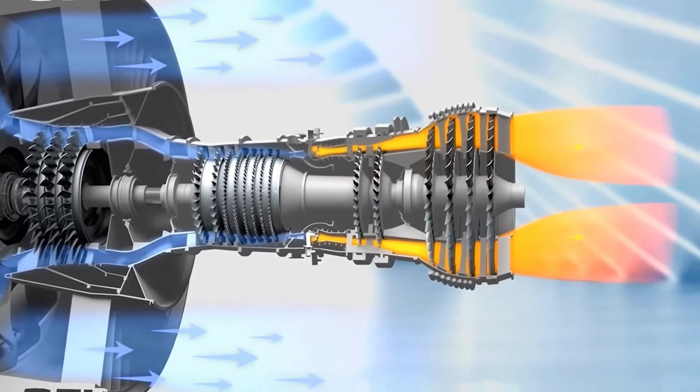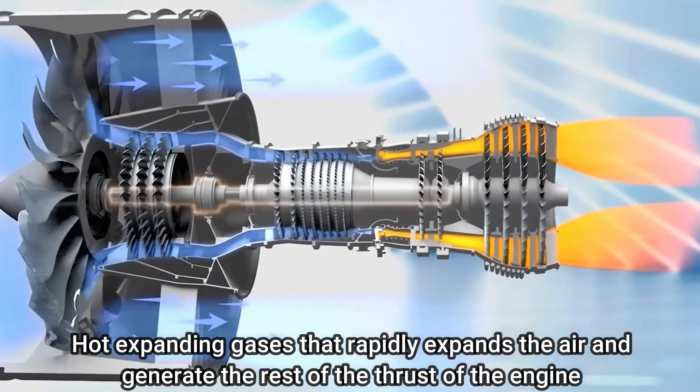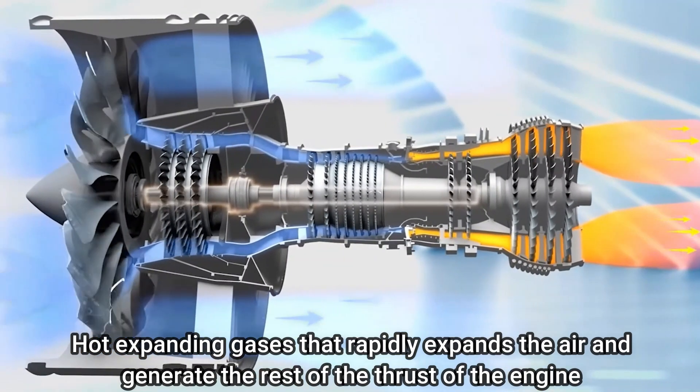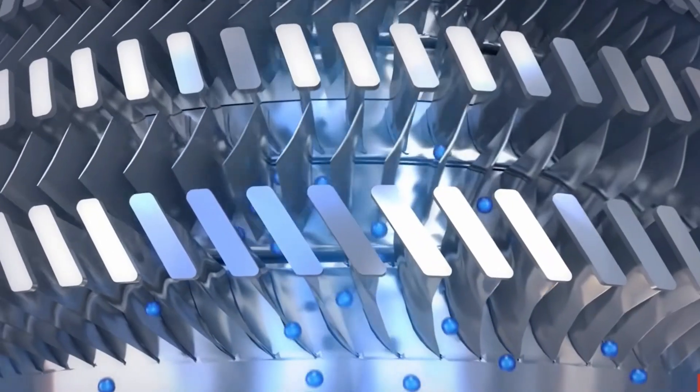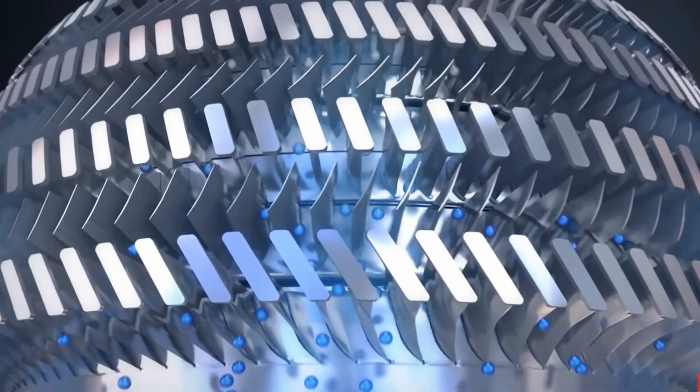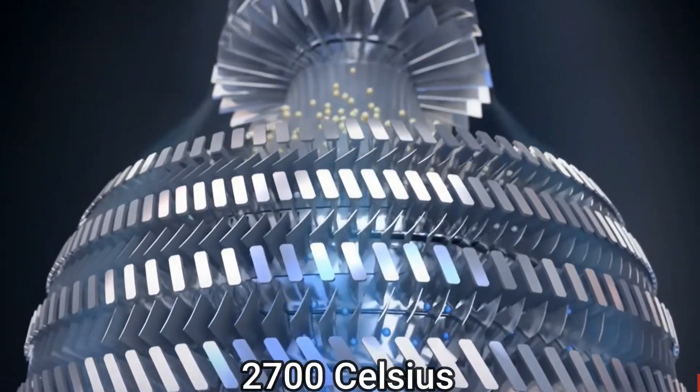The fuel burns with the oxygen in the compressed air, producing hot, expanding gases that rapidly expand the air and generate the rest of the thrust of the engine. The inside of the combustor is often made of ceramic materials to provide a heat-resistant chamber as the intense heat can reach 2700 degrees Celsius.